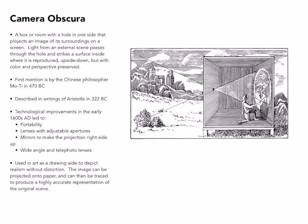There is a lot of historical precedent for it. It was written about by the Chinese philosopher Moti in 470 and also by Aristotle in 322, both B.C. Technological improvements in the early 1600s led to portability — they could move these rooms about. Lenses with adjustable apertures were created, mirrors were used in order to project right side up, and wide-angle and telephoto lenses came into being.